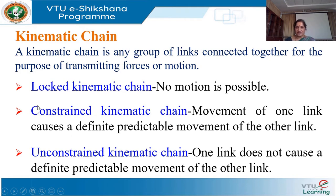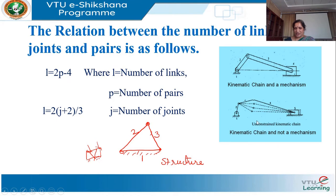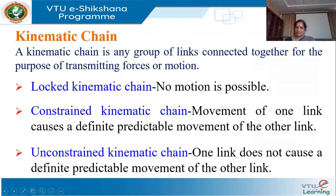In the unconstrained kinematic chain, one link does not cause a definite, predictable movement of the other links. Here, there are five links in the mechanism — one fixed link, links 2, 3, 4, and a slider. If we give input to link 2, we cannot predict the movement of the other links; there is random movement. That is called the unconstrained kinematic chain.